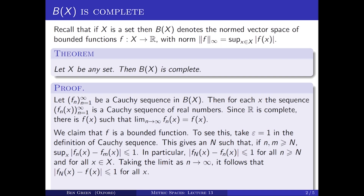So I can take the limit as little n tends to infinity for each fixed x. Because F(x) is the pointwise limit of the Fn(x)'s, that tells me that for every little x, the absolute value of F_N(x) minus F(x) is less than or equal to one. But F_N is a bounded function, and I've shown now that this F differs from it by at most one everywhere. And so F is also a bounded function. So I've now shown that the sequence Fn tends pointwise to a function F which is a bounded function.